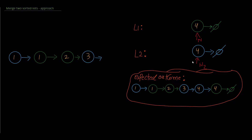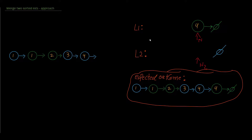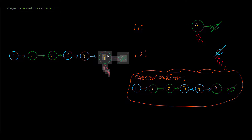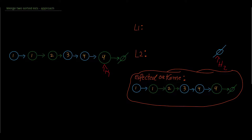Between four and four they're equal, so we just pick the blue one to match the picture. Now head two will point to null. As soon as one of the heads points to null, we take the other linked list and attach it to the result, and we're done — our linked list matches the expected output.